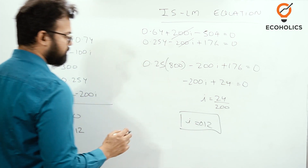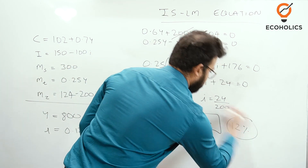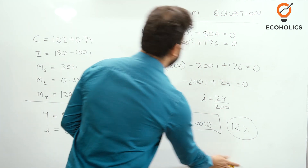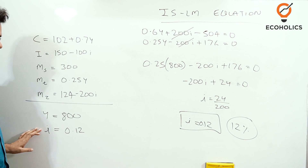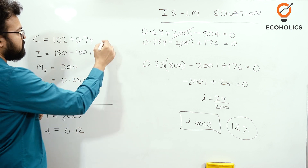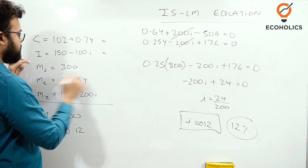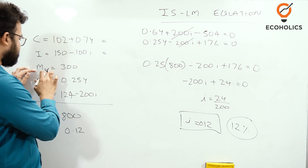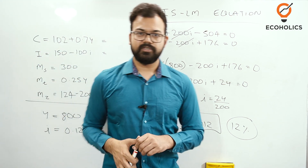So the interest rate is 12%. Now you have the value of Y = 800 and i = 0.12. You can substitute Y to get the value of consumption, and substitute i to get the investment value. Similarly, for the money market, if you add Mt and Mz you will get 300, confirming Ms = Md. That's how we solve the IS-LM equations.